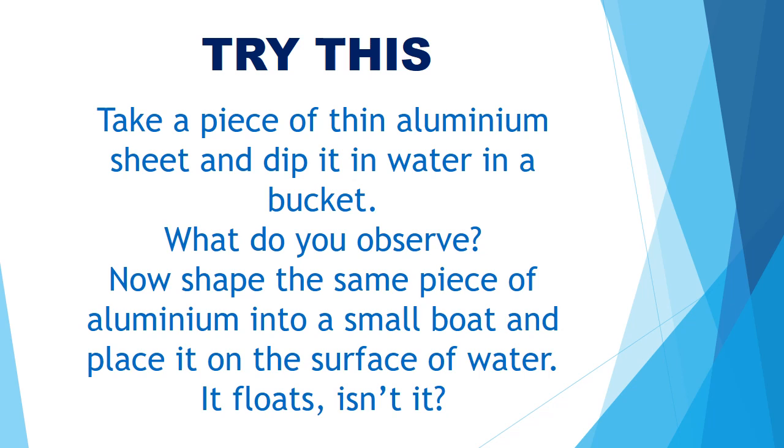In the first case, the volume of water displaced is equal to the volume of the aluminium sheet. Since the density of aluminium is more than that of water, the thin sheet is not able to displace enough weight of the liquid to stay afloat. In the second case, the boat displaces a volume more than the volume of the metal plate. In this case, it is possible that the weight of the extra volume of water displaced can be equal to the weight of the metal and hence the boat floats.